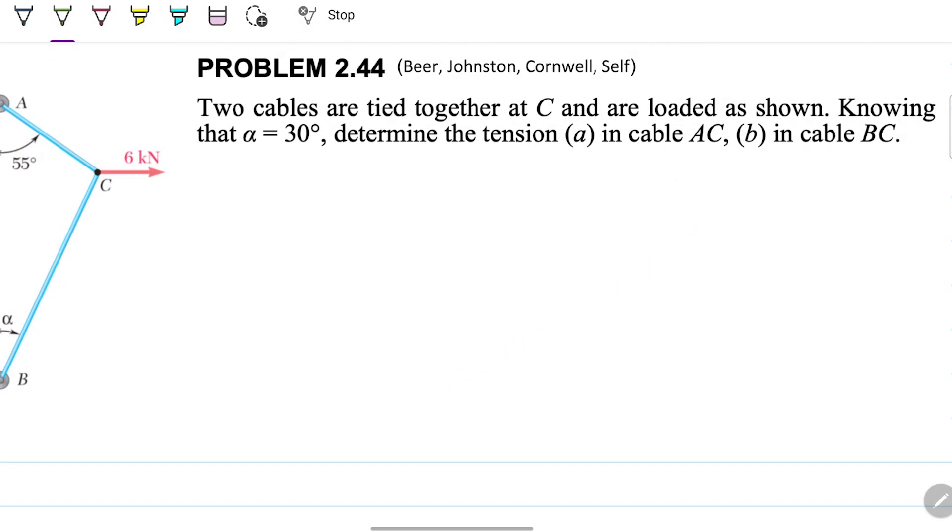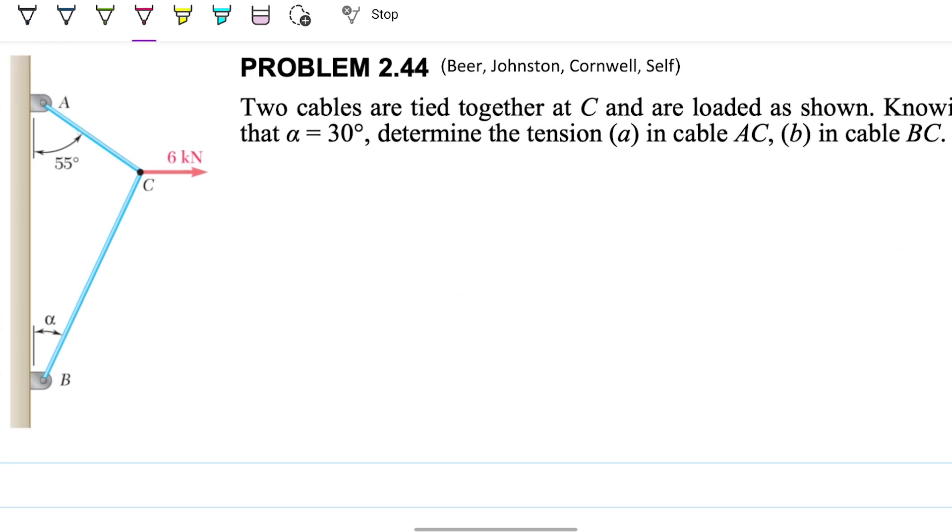The problem statement reads: two cables are tied together at C and are loaded as shown. Knowing that alpha is 30 degrees, determine the tension in cable AC and the tension in cable BC. So once again we have a problem with two cables tied here at C, and they have a load of 6 kilonewtons pulling to the horizontal. These two tensions, tension CB and tension CA, are sharing the load of holding those 6 kilonewtons in place.